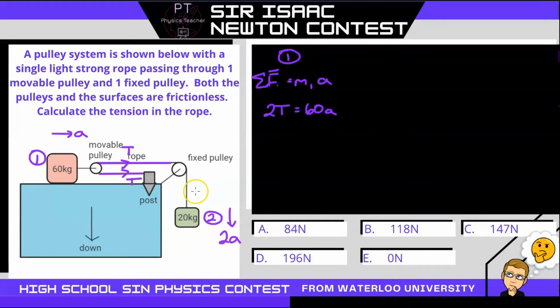Now for the second block, we have that tension force up. We also have gravitational force down. So we apply Newton's second law. So the sum of all forces is going to equal that second mass times its acceleration, which is twice the acceleration of our first mass.